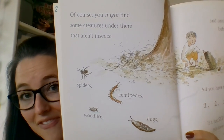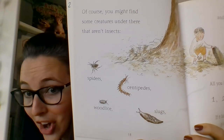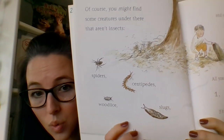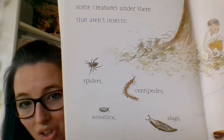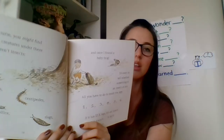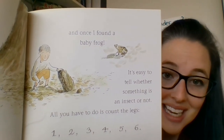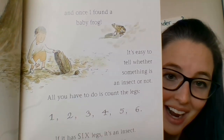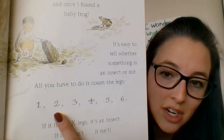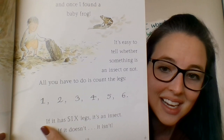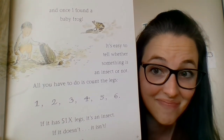Of course, you might find some creatures under there that aren't insects. Spiders, wood lice, centipedes, and slugs are not insects. And once I found a baby frog. It's easy to tell something is not an insect — all you have to do is count the legs. If it has six — one, two, three, four, five, six — it is an insect. If it doesn't have six legs, it isn't.